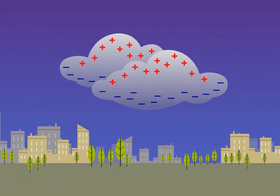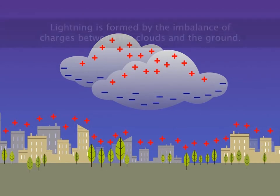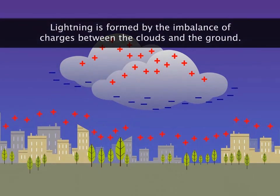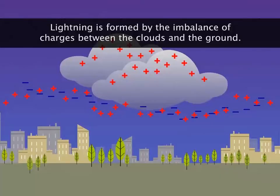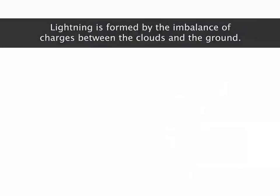Likewise, tall trees and skyscrapers on the ground have a positive charge. As charges of a different kind attract each other, the positive charges on the ground get attracted to the negative charges in the clouds. When these charges meet, a streak of light is formed, known as an electric discharge.